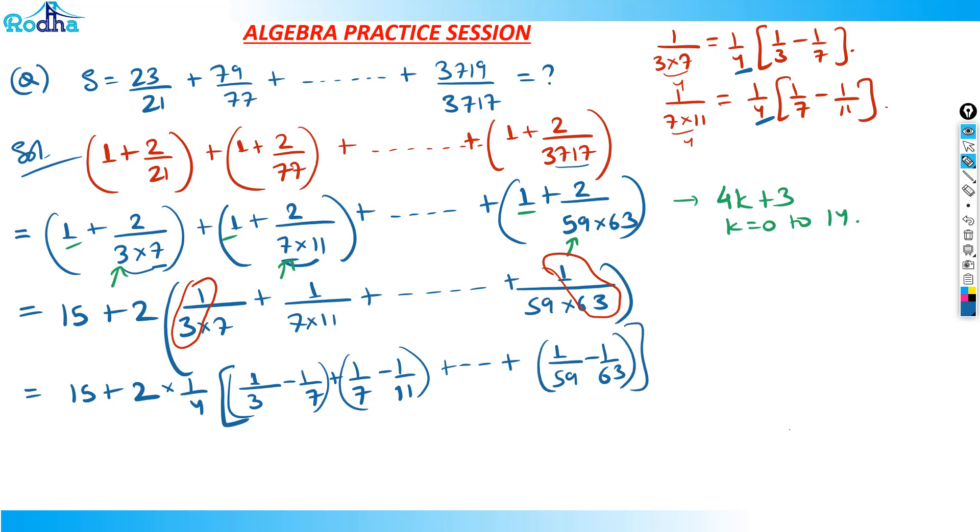All the terms cancel out. Only the terms left are 15 + 1/2 × 1/2 × (1/3 - 1/63). 21 - 1 is 20, so 15 + 10/63 = (63×15 is 945) 955/63. That's the answer to this question.